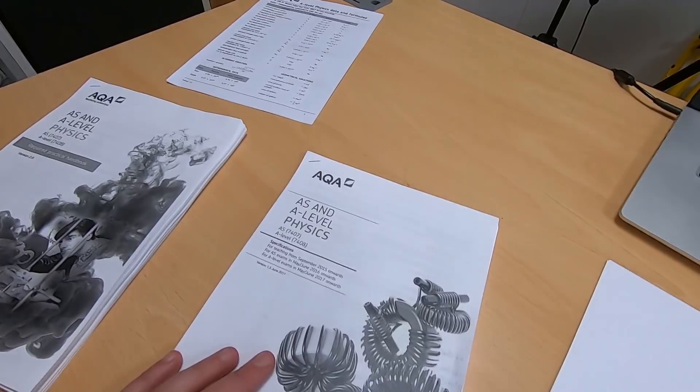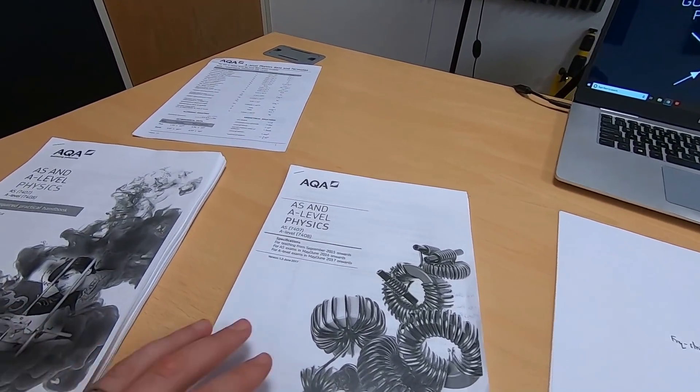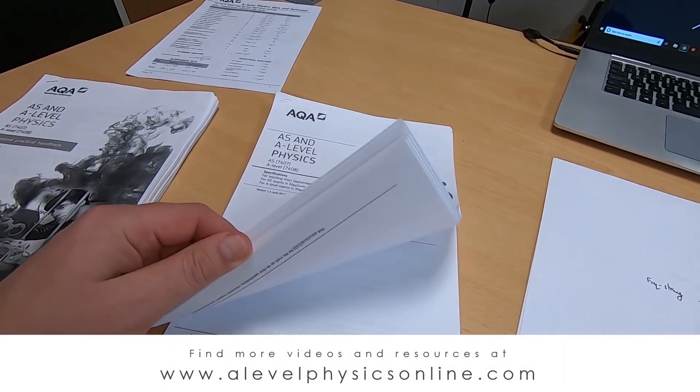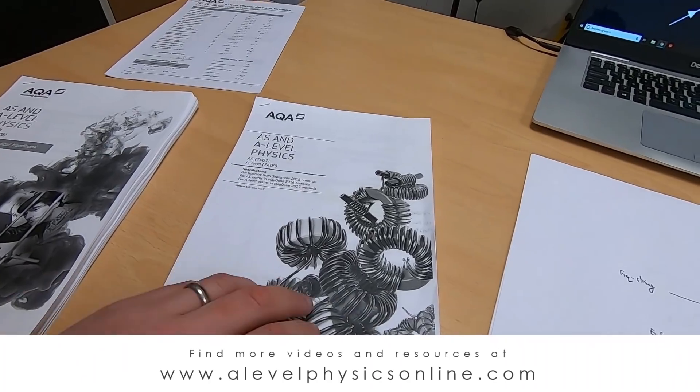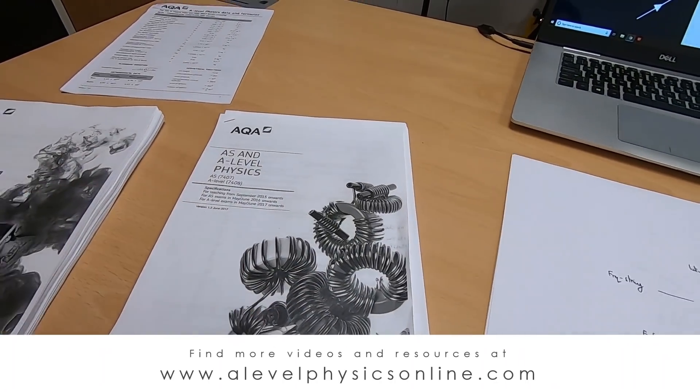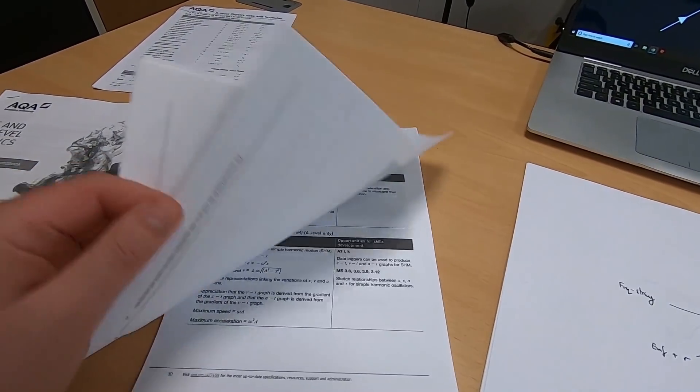So what I've got, I've got a couple of documents. Now all of these can be found on my website at alevelphysicsonline.com. So what I've done is I've printed out the full specification. Now I do have learning checklists which are a bit easier to read because a lot of this isn't so relevant. But basically what I've done is I've got the full specification here and that has everything in it.